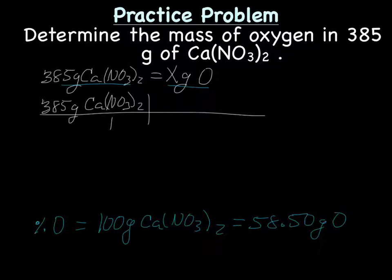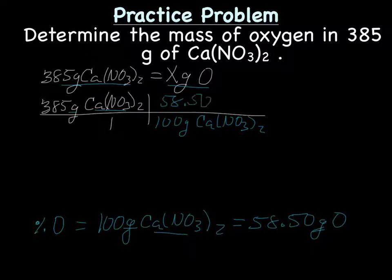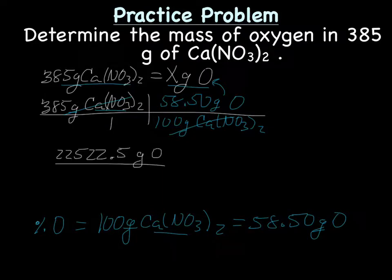Now, put this thing in the grid. Who goes on the bottom? We have grams, but we have grams here and here as well. So, what else can we use to identify which one goes at the bottom? How about the molecule? We have that molecule, so we'll put 100 grams Ca(NO3)2 at the bottom, and 58.50 grams of O on the top. Our units and compounds cross out, and we're left with gram O, which is what we're looking for. Now, we multiply across the top, and that gave me 22522.5 grams oxygen over 100.